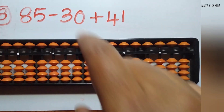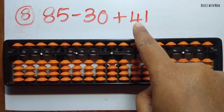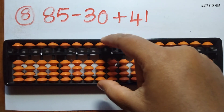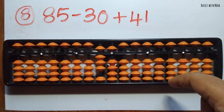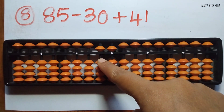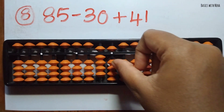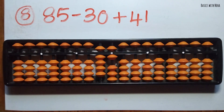The eighth sum: 85 minus 30 plus 41. First take 85, now you should minus 30 — minus 3 from the 10's rod. Add 41 — plus 4 in the 10's rod and 1 in the 1's rod. The answer is 96.